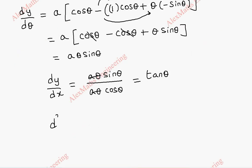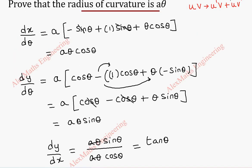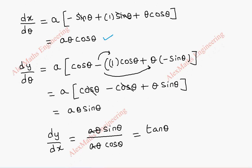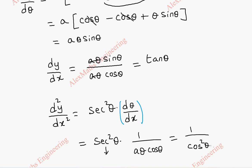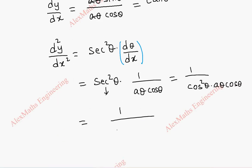Now we have to find the second derivative d square y by dx square. Tan theta differentiates to secant square theta. By the chain rule, we differentiate with respect to x, so we multiply by d theta by dx. Since dx by d theta is a theta cos theta, d theta by dx is its reciprocal: 1 by a theta cos theta. So the second derivative becomes secant square theta into 1 by a theta cos theta, which simplifies to 1 by a theta cos cube theta.